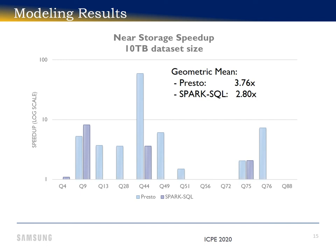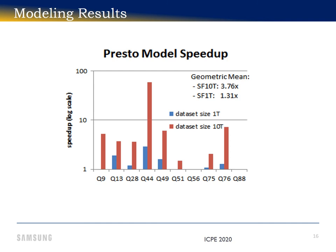Query 75 sees a similar speedup for both Presto and Spark — that's a 2 times speedup. Not only do we not see similar speedups for all queries, but different scale factors show different speedups for the same query running in the same database engine.